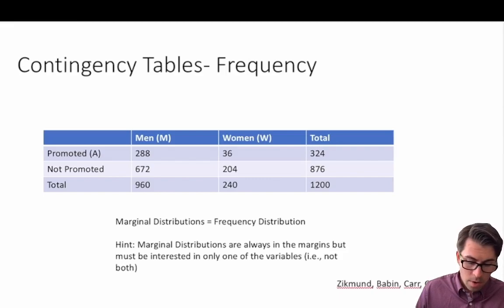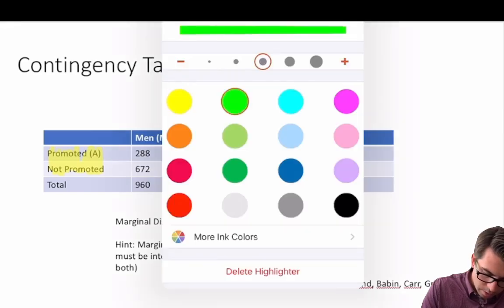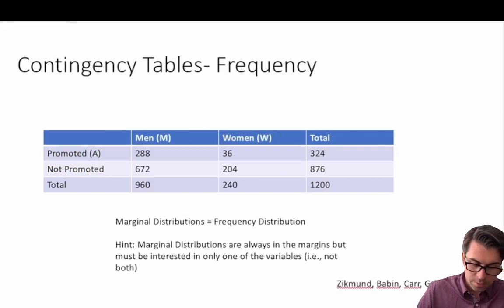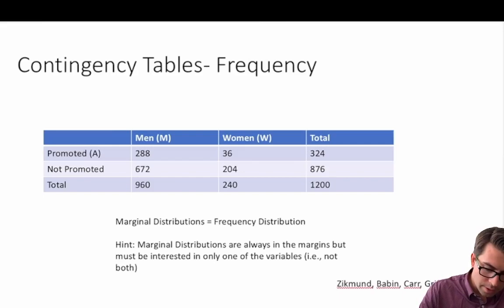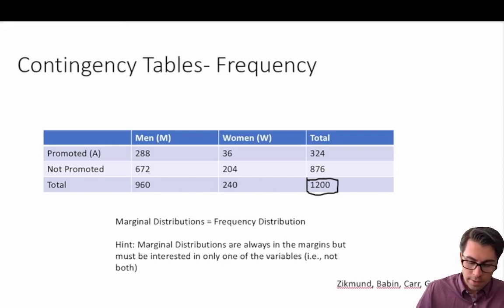In this example we have promotion status along our rows and then across the top in our columns we have sex — men versus women. So we have two categorical variables: men and women, and promotion status which is promoted or not promoted. Within our contingency table, down in the bottom right-hand corner, I call this the total-total box — this is where the sum of the rows and the sum of the columns will equal exactly the same number.